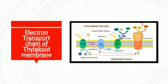The electron transfer chain of the thylakoid membrane involves the chloroplast, stroma, and thylakoid lumen. First, Photosystem II receives light and transfers electrons to plastoquinone (PQ), which then transfers them to plastocyanin (PC), and PC further transfers them along the chain until the cycle completes.